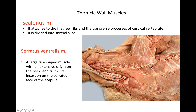Then we have the serratus ventralis, which is a fan-shaped muscle. This muscle has its origin from the ribs and from the vertebra, and its insertion will be on the serrated surface of the scapula in the subscapular region.